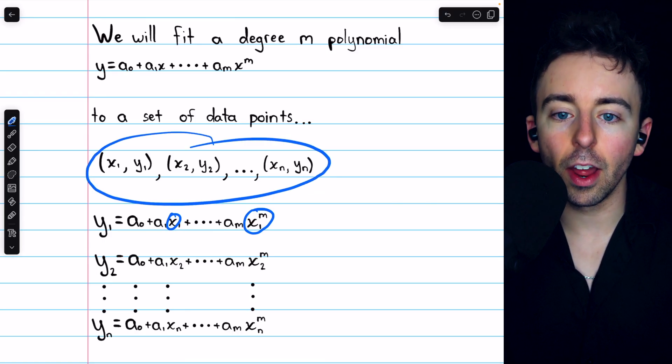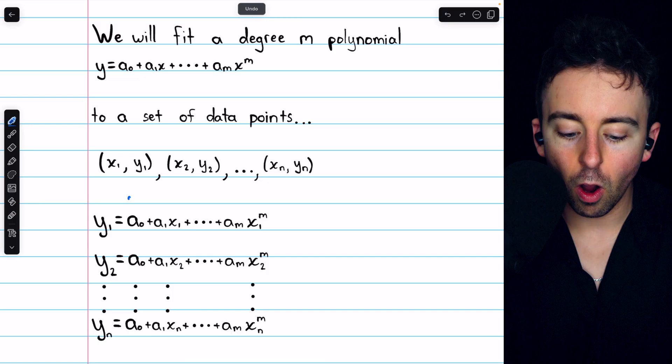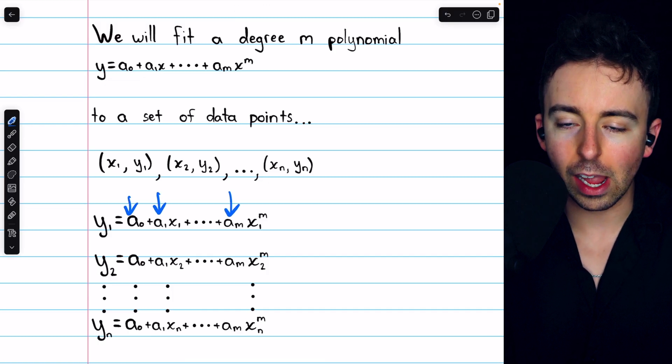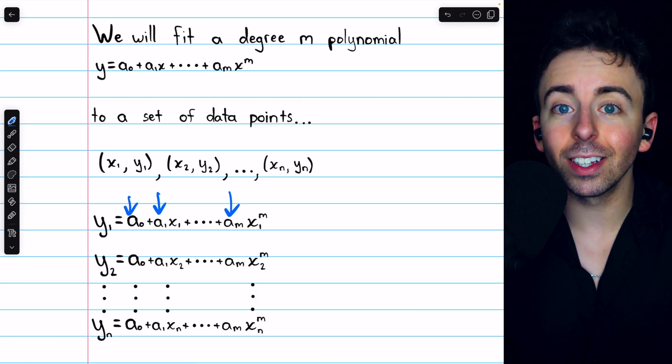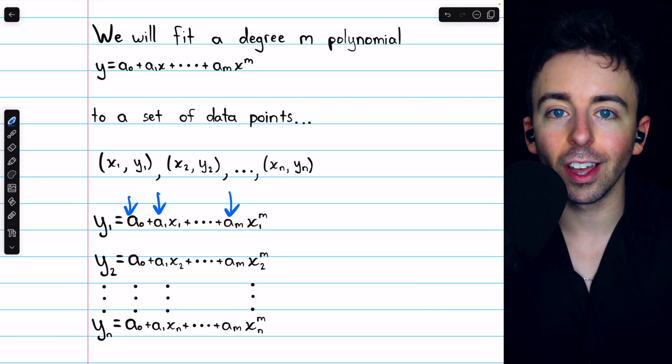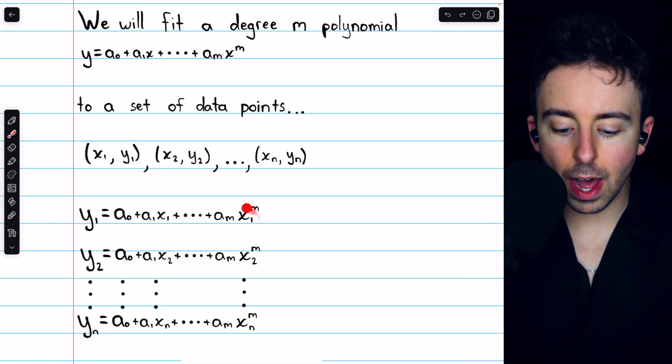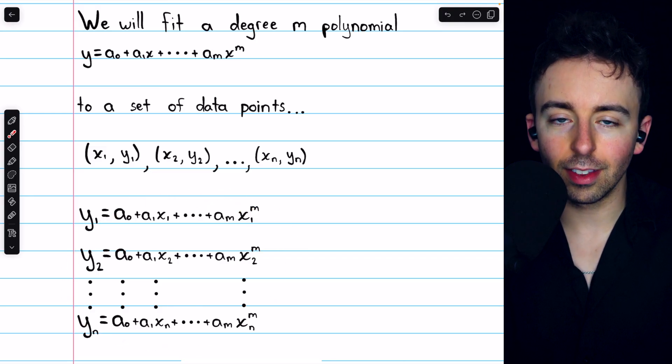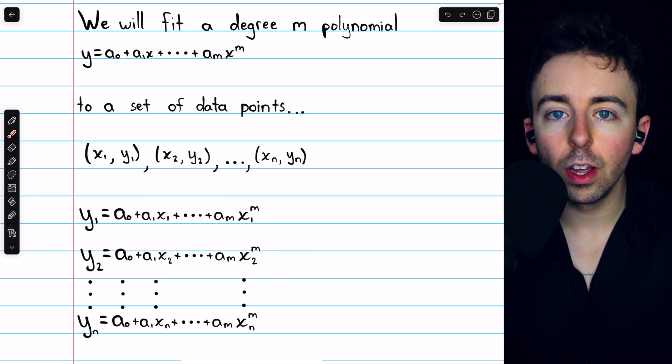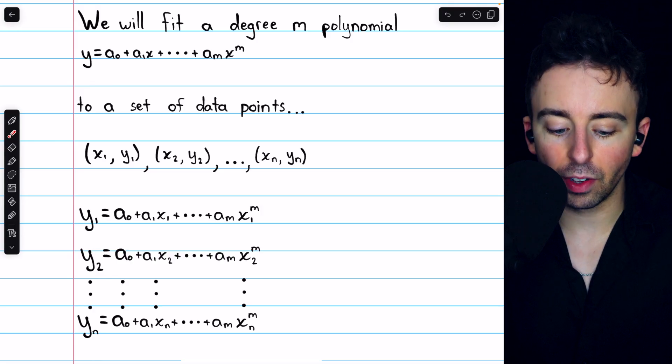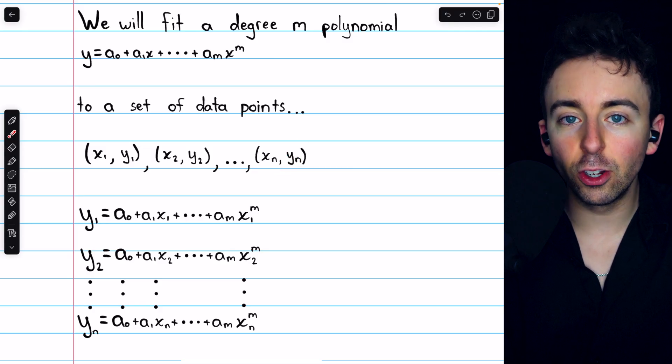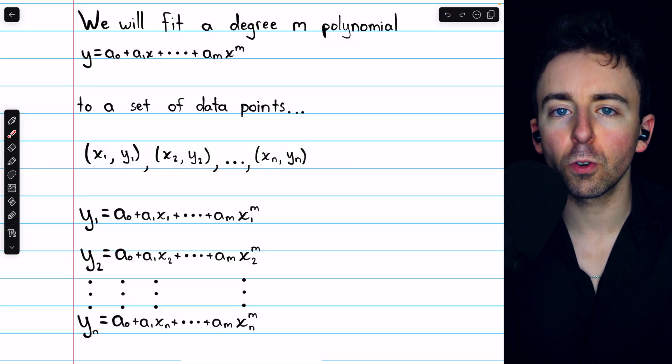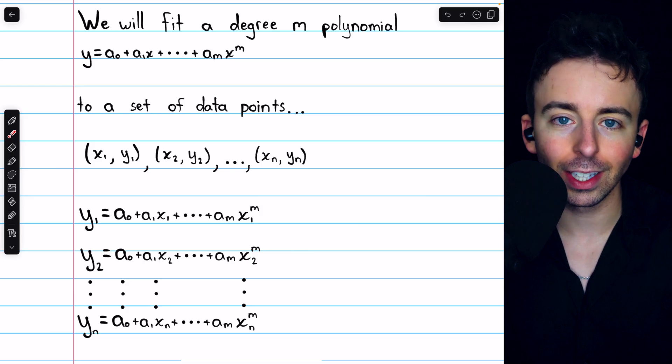The things that are unknown in these equations are those coefficients, a0, a1, up through a_M. And all of these equations are linear with respect to those unknowns. So keep that in your mind. In all of these equations, the only things that aren't known are those a's, those coefficients. The y's, the x's, all of those are known. They come from a given set of data points. And it's to that set of data points that we're trying to match a degree M polynomial.